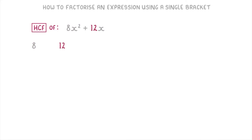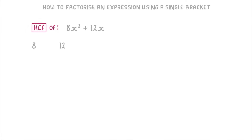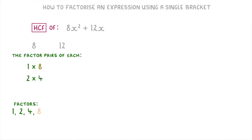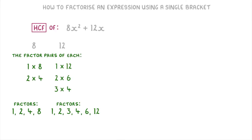Starting with the 8 and the 12, the biggest number that goes into both of them is 4. If you didn't know that, you'd have to list out all the factors of each and pick the biggest factor in both lists. For 8, the factor pairs are 1×8 and 2×4, so its factors are 1, 2, 4, and 8. For 12, the factor pairs are 1×12, 2×6, and 3×4, so its factors are 1, 2, 3, 4, 6, and 12. Comparing these two lists, the biggest number in both is 4, so that's the highest common factor of 8 and 12.